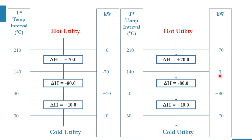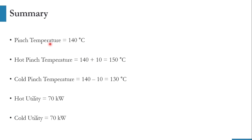The pinch point is where the cascade value equals zero, which corresponds to the shifted temperature of 140°C. Since 140 is a shifted value, we reverse the calculation: hot pinch temperature = 140 + 10 = 150°C, and cold pinch temperature = 140 minus 10 = 130°C.